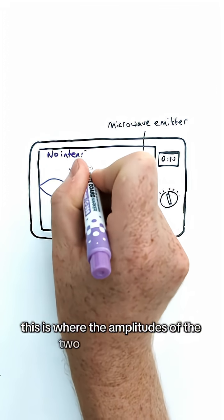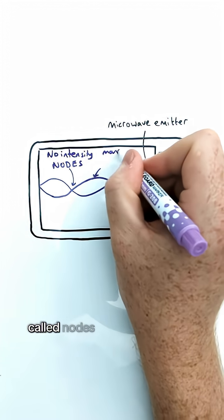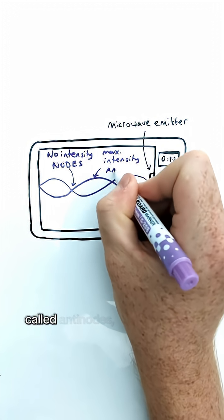This is where the amplitudes of the two waves combine, leaving some areas of zero intensity called nodes and some areas of maximum intensity called antinodes.